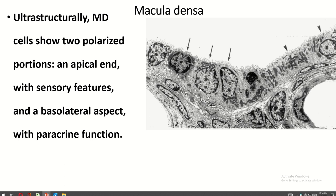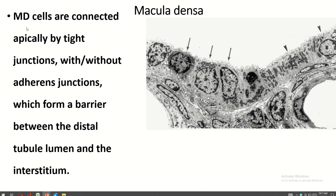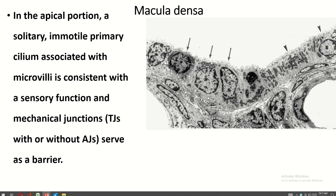Ultrastructurally, the macula densa shows two polarized portions: the apical portion and the basal portion. The apical portion has some sensory features, while the basolateral aspect has some paracrine function. Macula densa cells are connected apically by tight junctions with or without adherens junctions, which form a barrier between the distal tubular lumen and the interstitium. In the apical portion, a solitary primary cilium associated with microvilli is consistent with a sensory function and mechanical barrier function.